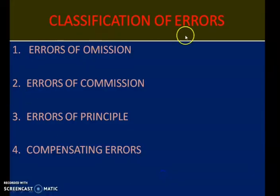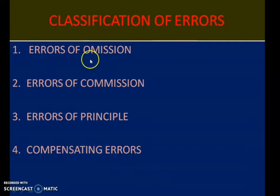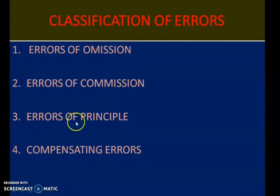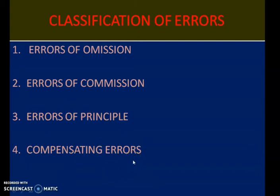Errors can be classified into four types. The first one is error of omission, second one is error of commission, third one is error of principle, and fourth one is compensating errors. Let us have a detailed look at each of these errors.